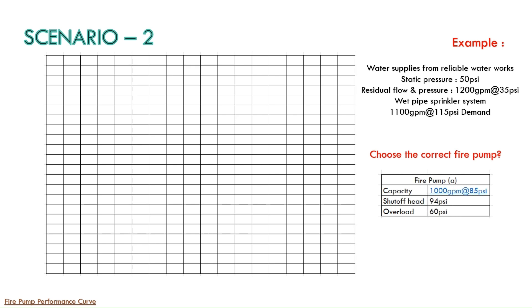First option is 1000 GPM at 85 PSI with shutoff at 94 PSI and overload 60 PSI. And option B the fire pump capacity is 750 GPM at 95 PSI shutoff at 98 PSI overload 76 PSI.